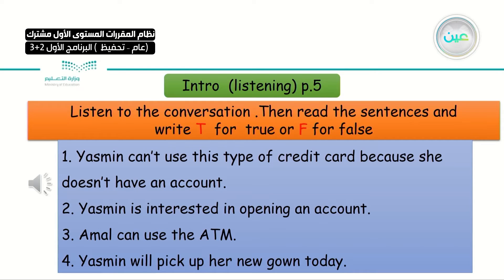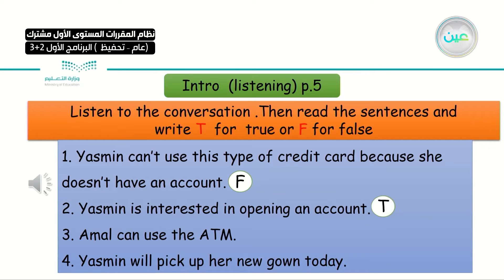So did you get the correct answers? Sentence one: Yasmin can't use the credit card because she doesn't have an account — that's false. She can use it, but they ask her to open an account so she can have more services. Sentence two: Yasmin is interested in opening an account — true. Sentence three: Amal can't use the ATM — false, because she forgot her credit card. Sentence four: Yasmin will pick up her new gown today — false. She's going to pick it up tomorrow because she needs to fix the hem.